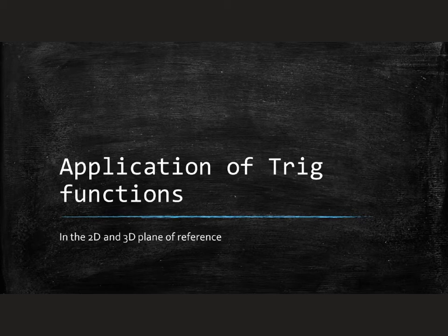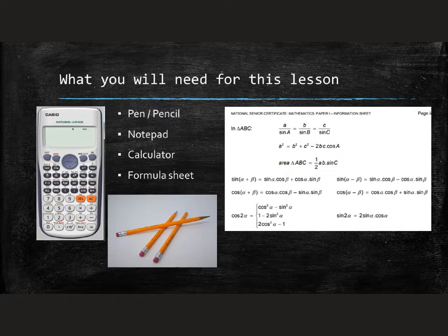Welcome to the final lesson on trigonometry, where we look at the application of trig in 2D and 3D planes of reference. What you should have today is a pen, pencil, notepad, calculator, and your formula sheet. Take special notice today of the grade 11 formulas: sine rule, cosine rule, and area rule, and also the compound and double angle formulas you've been working on this past week.